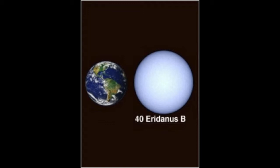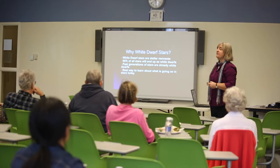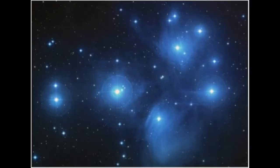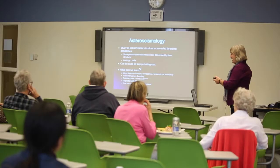The stars that I study are called white dwarfs. A white dwarf is a dead star. 95% of all stars are going to become these white dwarf stars at the end of their evolution. So the best way to learn about what's going on in stars and the history of the Milky Way is to go look in the stellar graveyard — dig around in there and find out what's going on with these white dwarf stars.